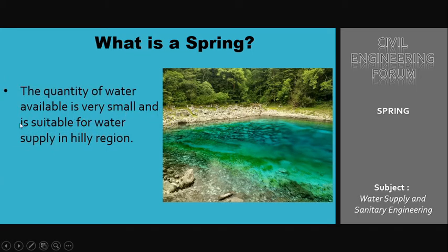Regarding the quantity of water available in a spring, the quantity is very small and is suitable for water supply only in hilly regions. We cannot expect much outflow for large consumer populations, but we can treat hilly regions around the spring. Here I have shown a real picture of a spring where water has accumulated in the form of a lake — this water did not come from rain but is spring water obtained from the ground.